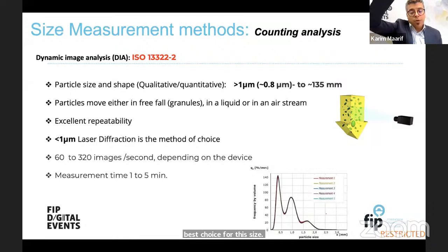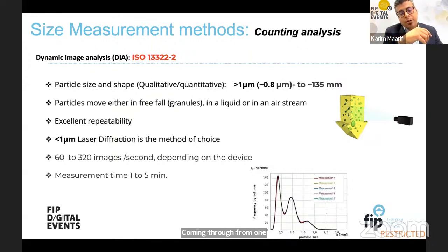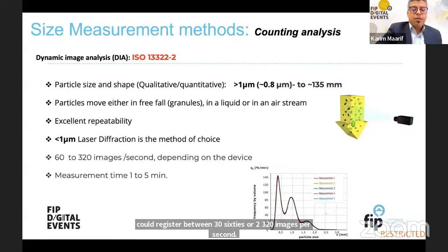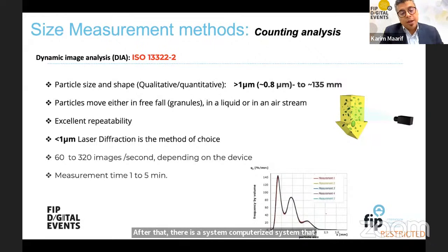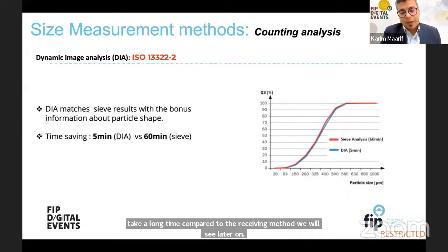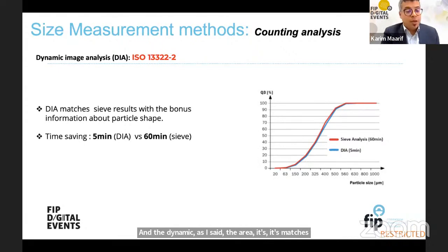In dynamic image analysis, when powder flows either by air, liquid, or gravity stream, a light source from one side records only the shadow of the particles on a screen. The camera can register between 60 to 320 images per second. A computerized system then analyzes the data and gives us an idea about the particle size distribution. Measurement time is between one to five minutes, much faster than the sieving method. Dynamic image analysis matches the sieve results with the bonus of providing information about particle shape in a shorter time.